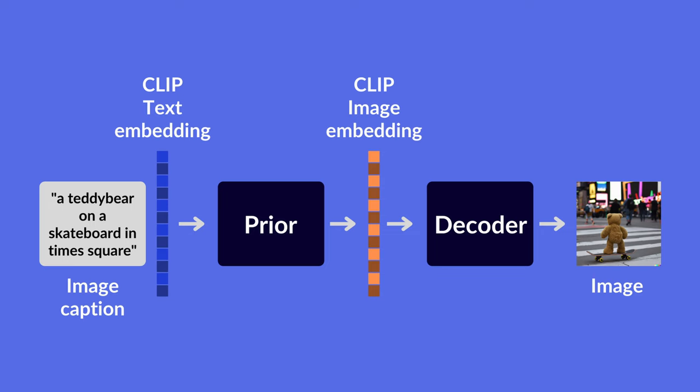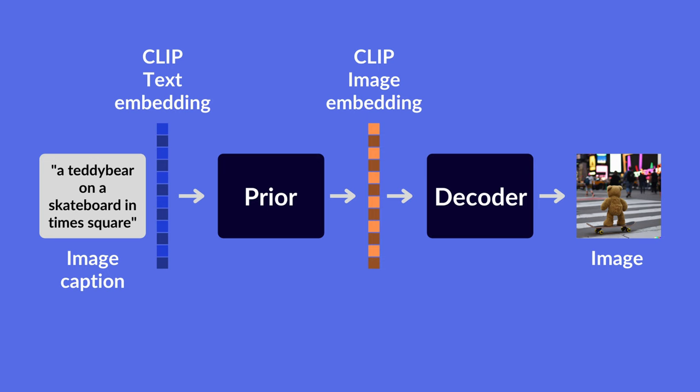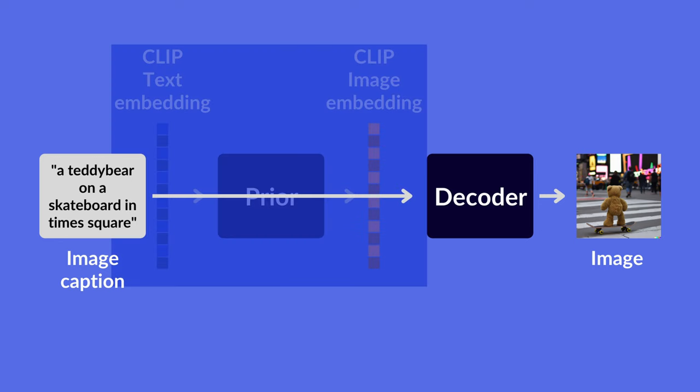Once the prior creates the CLIP image embedding, the next step is to create the image itself, and the decoder is responsible for that. You might wonder: why can't we just pass the caption or the text embedding directly to the decoder? Why do we need a prior at all? The authors asked themselves the same thing. They tried passing the caption directly to the decoder, and also the text embedding directly to the decoder, and found that having the prior actually yields the best results.